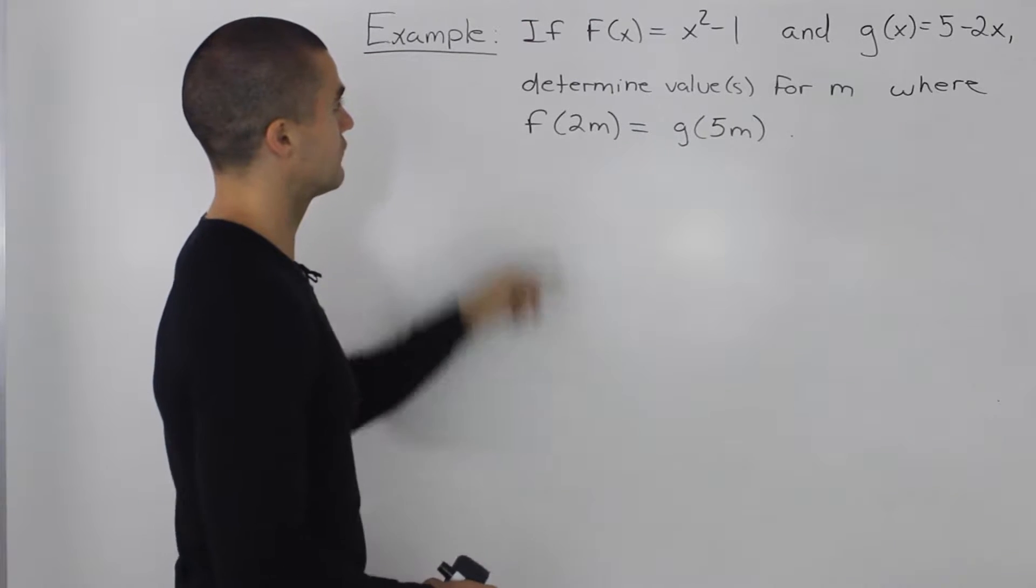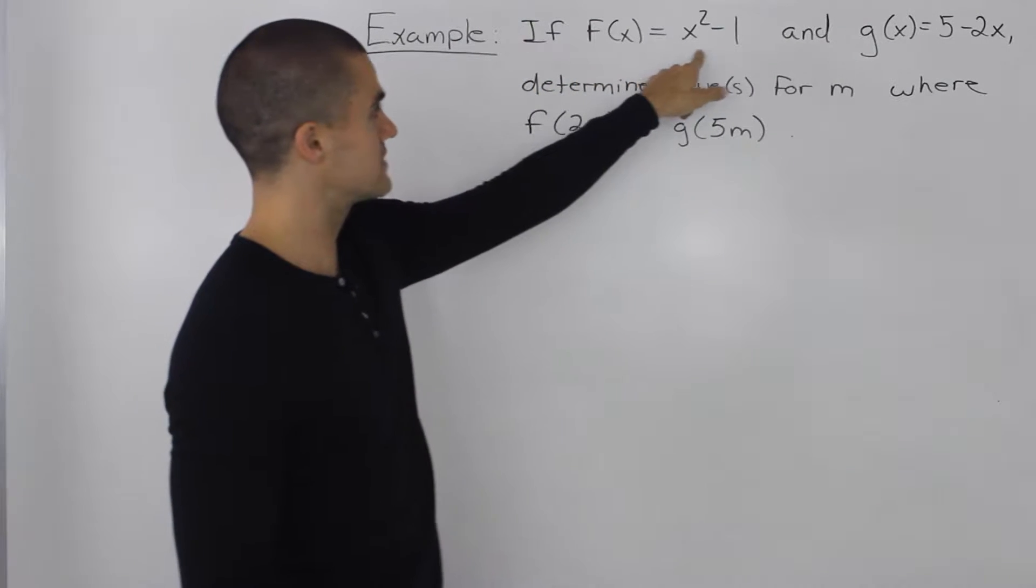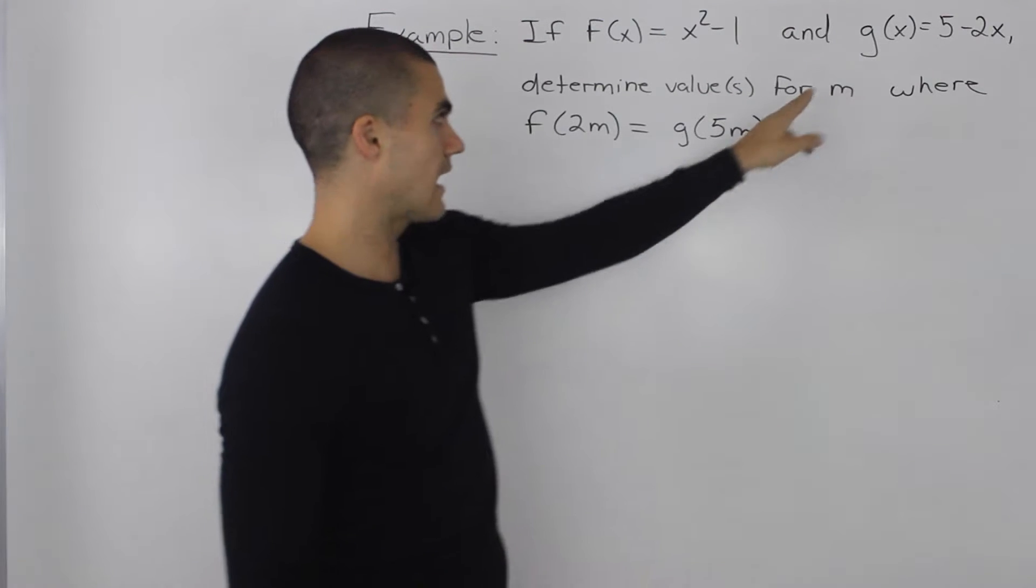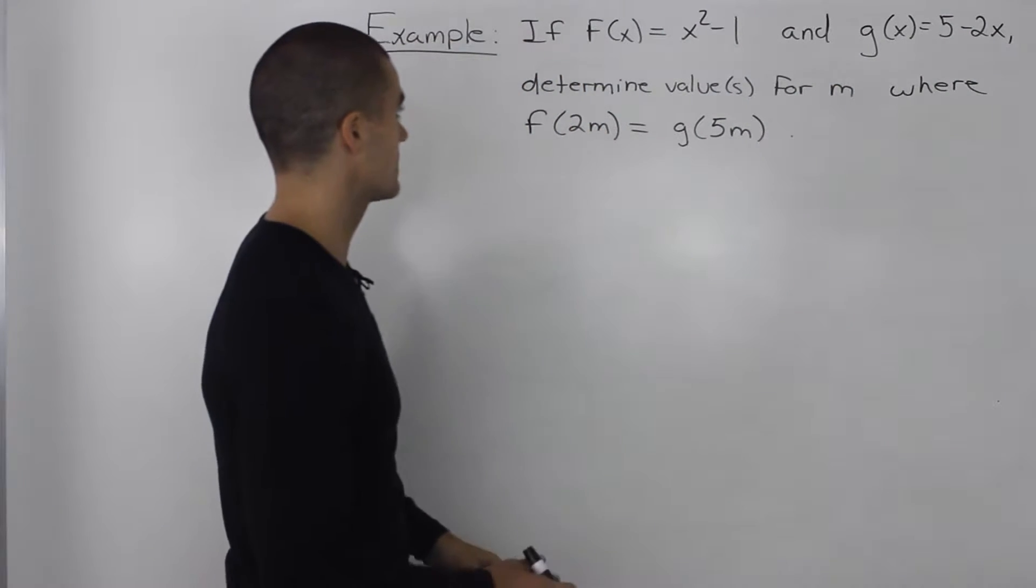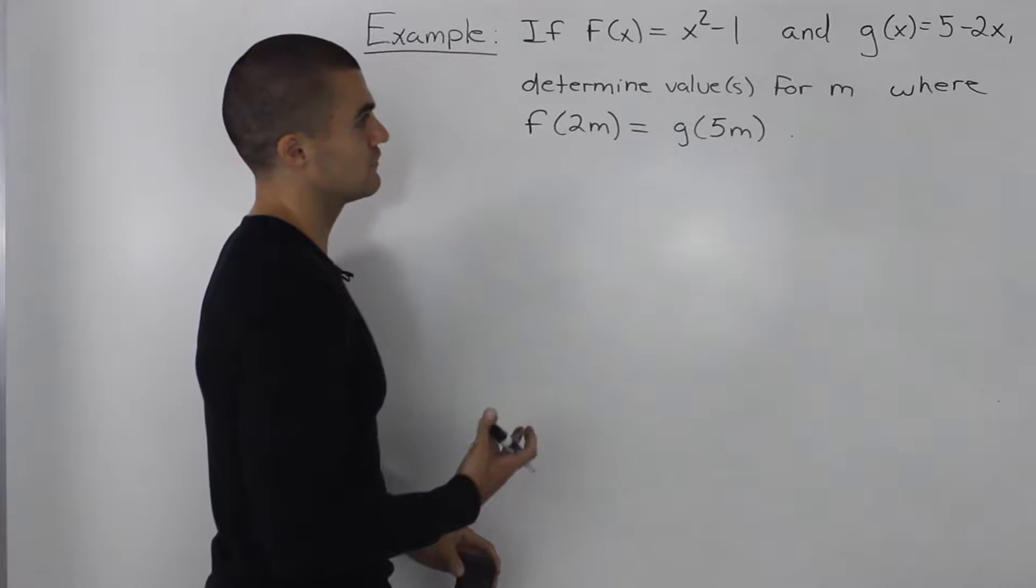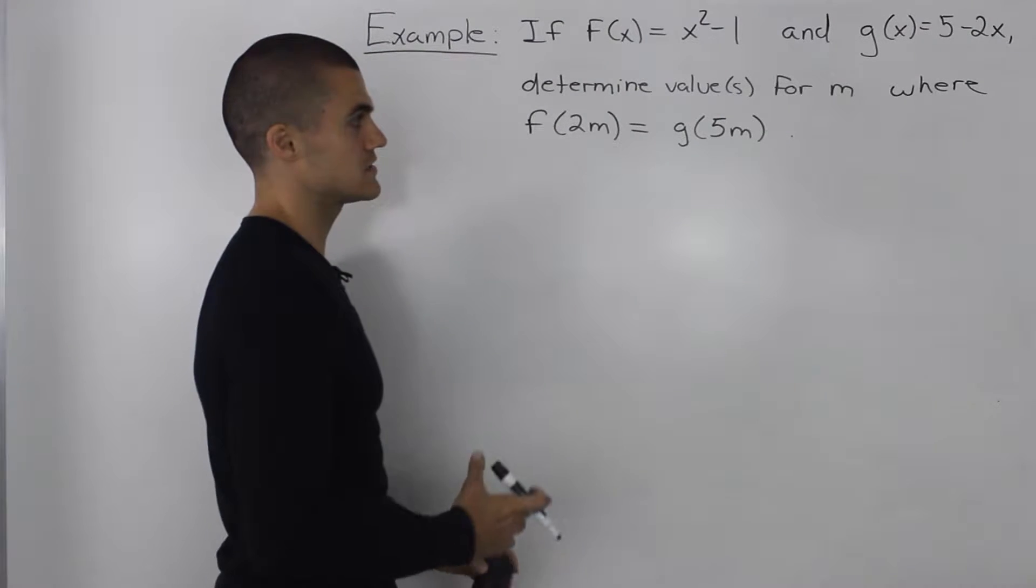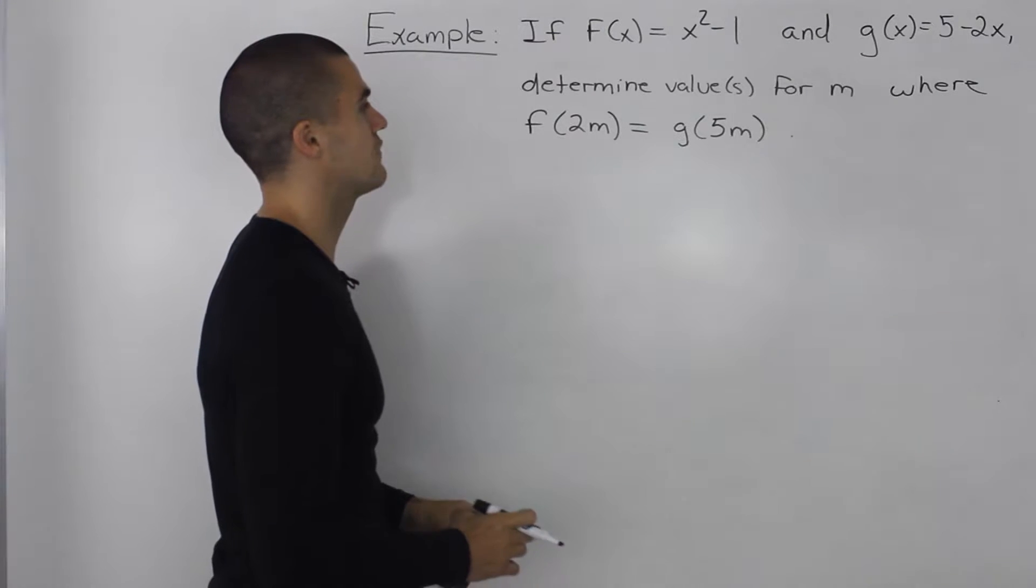Moving on to the next example, we have a function f of x defined as x squared minus 1 and then another function g of x defined as 5 minus 2x, and we have to determine the values for m where f of 2m is equal to g of 5m.